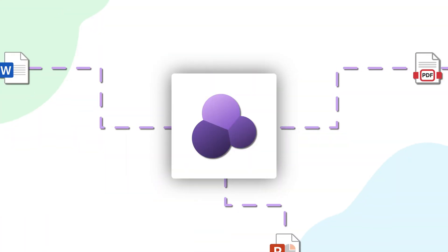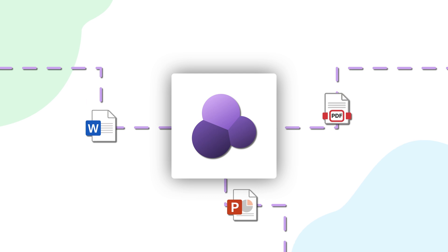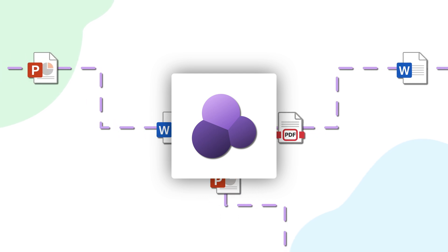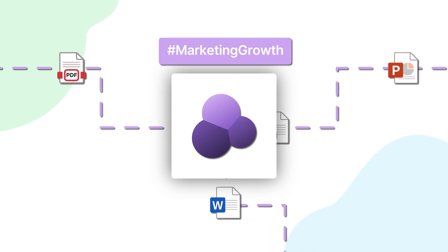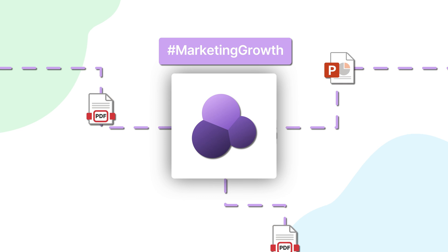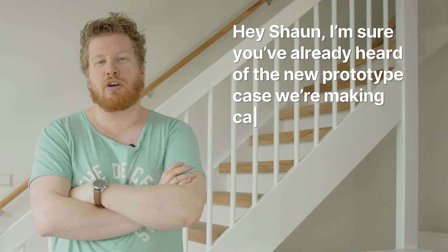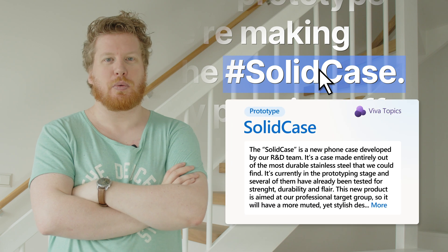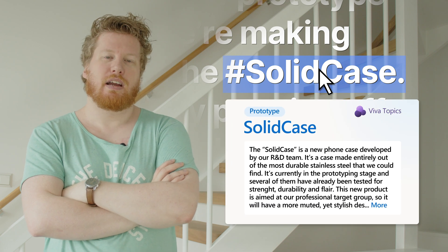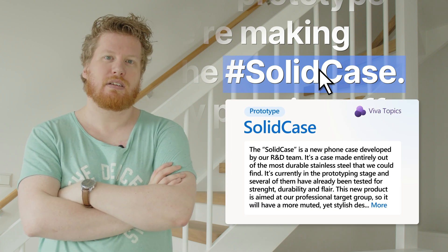If you want to learn about certain subjects within your organization, Viva Topics is the app for you. It's an AI-powered app in Microsoft 365 that indexes content across your entire organization and creates relevant topics. When a topic shows up in a conversation or an email, you can hover over it with your mouse and a card will give you more information.